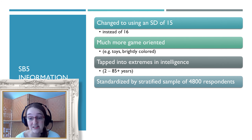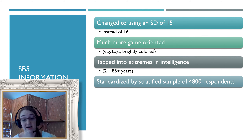The SB-5 is also much more game-oriented than it used to be, and when I say game-oriented, it's because this test is primarily targeted at children — each of those game-oriented pieces involves mostly nonverbal behavior. It also taps the extremes of intelligence at all ages, moving beyond just the cap at age 16 that Terman originally had. It was standardized with stratified sampling using 4,800 respondents — a pretty solid amount, and way better than the original, which had about 50 respondents in the standardization sample.